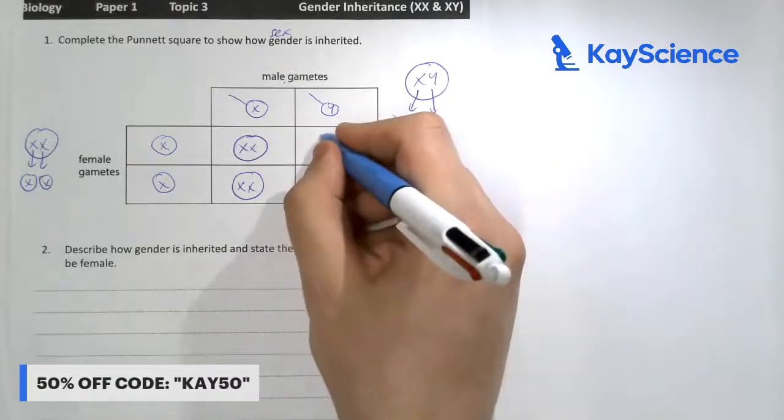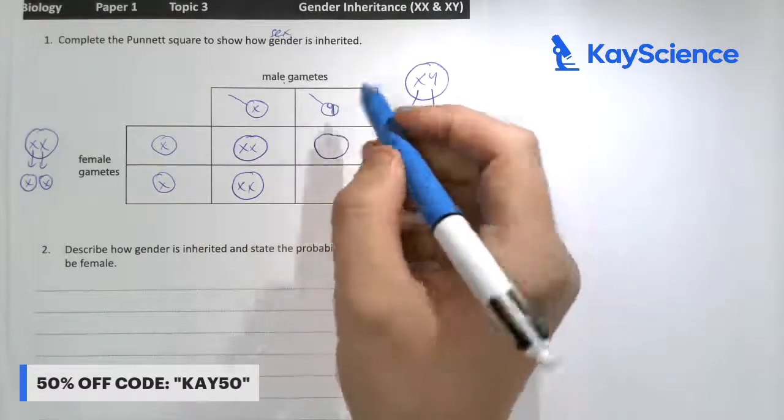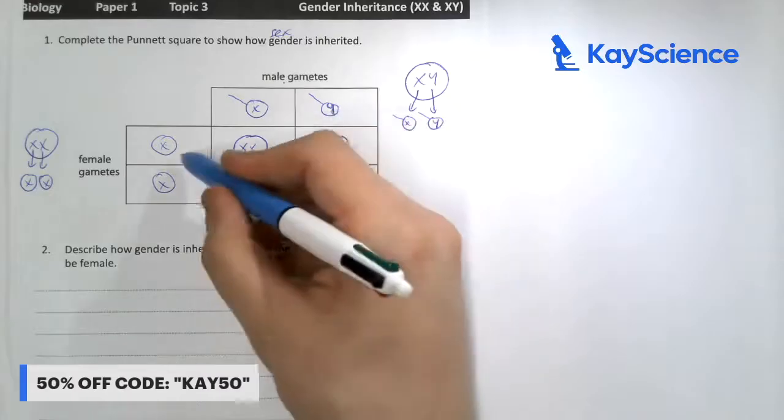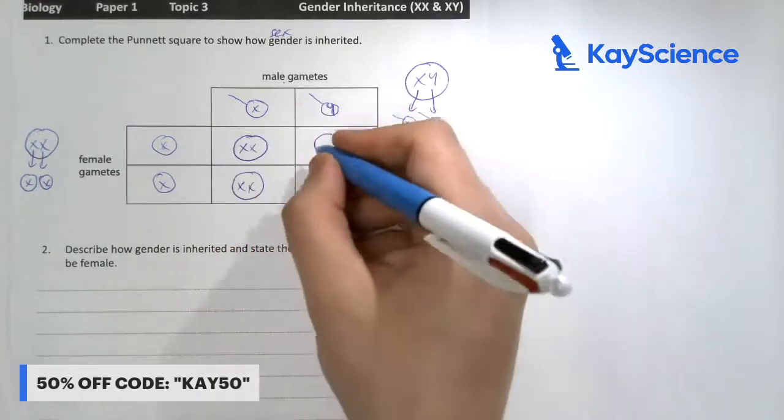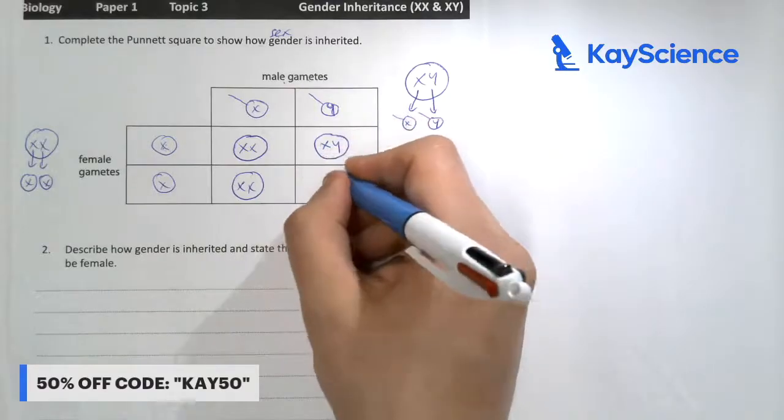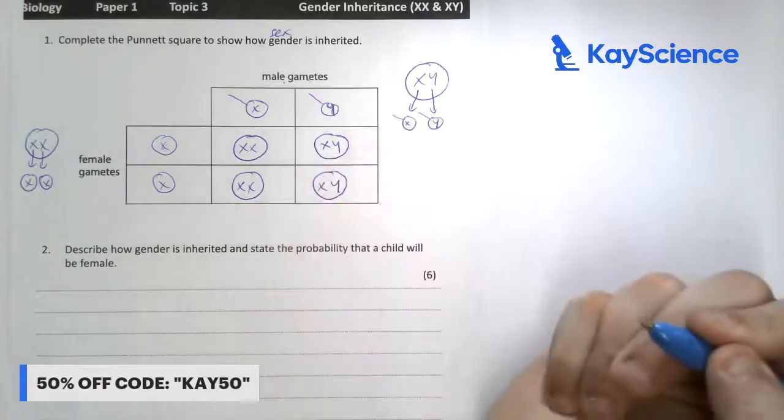This one here, this Y sperm with this Y sex chromosome fertilizes this egg with an X sex chromosome. It'll be XY, and the same one for this one here, XY.